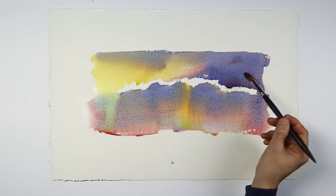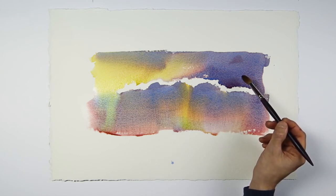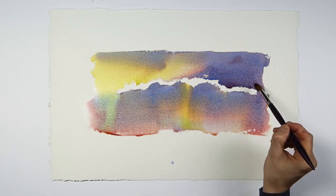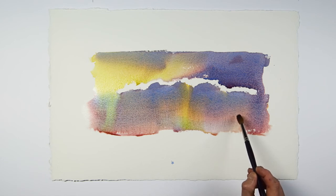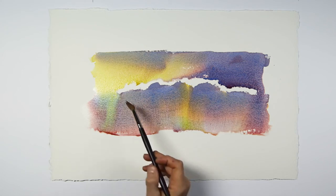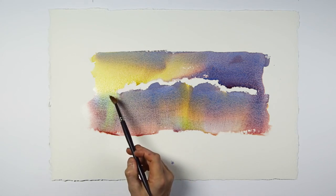Look here at how the sediment of the cerulean has settled into the texture of the paper. And here, where the alizarin and the cerulean have separated from each other. Also, areas here where the yellow and blue have made green.